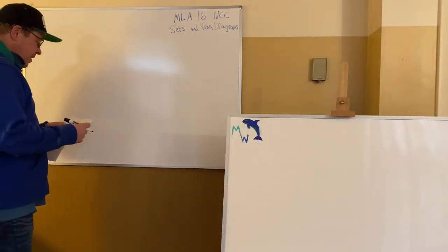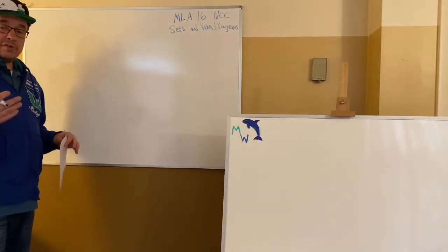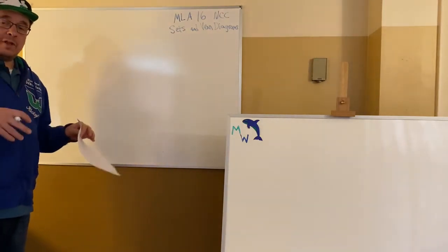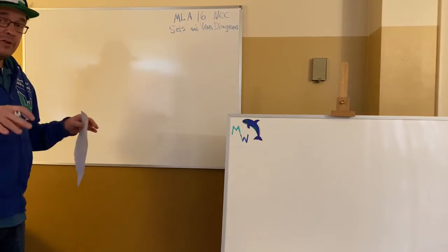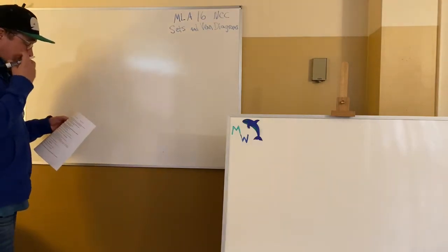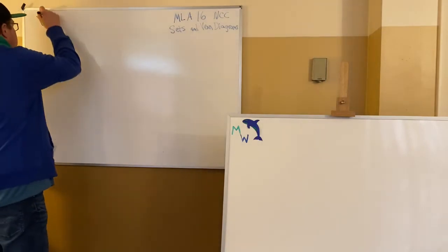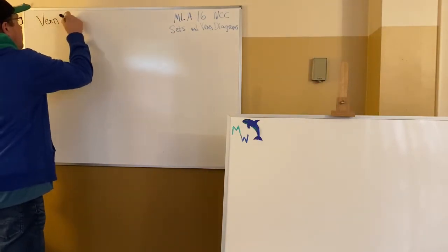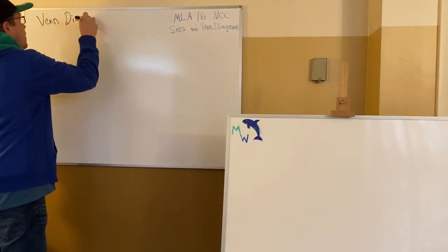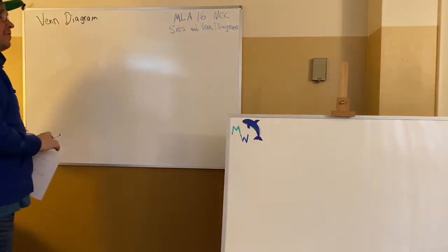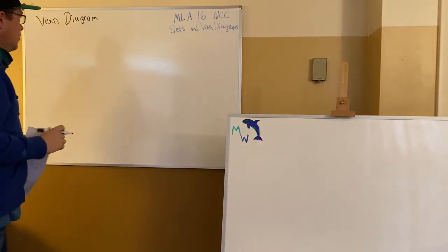Here's the story. Venn diagrams will use overlapping circles. You might think of the Olympic rings, but they don't all overlap perfectly. We're going to have up to three circles overlapping in a square. So I'm going to set up a Venn diagram. The person who invented it, the last name was Venn, so there we go, capitalized and so forth.